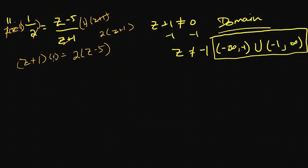Using the distributive property, I multiply that 1 across, and I get z plus 1 on this side. And again, using the distributive property, I multiply the 2 across, and I get 2z minus 10 on that side.